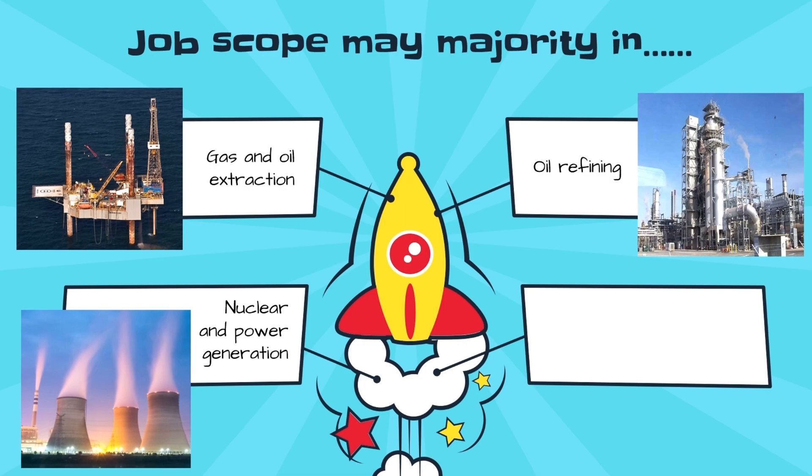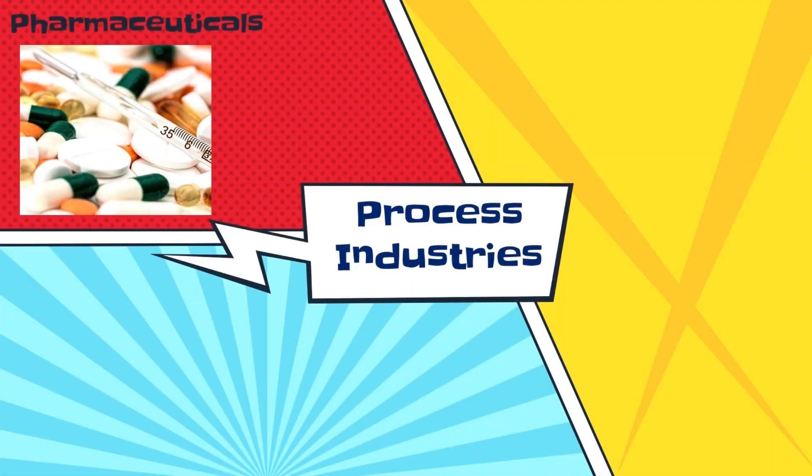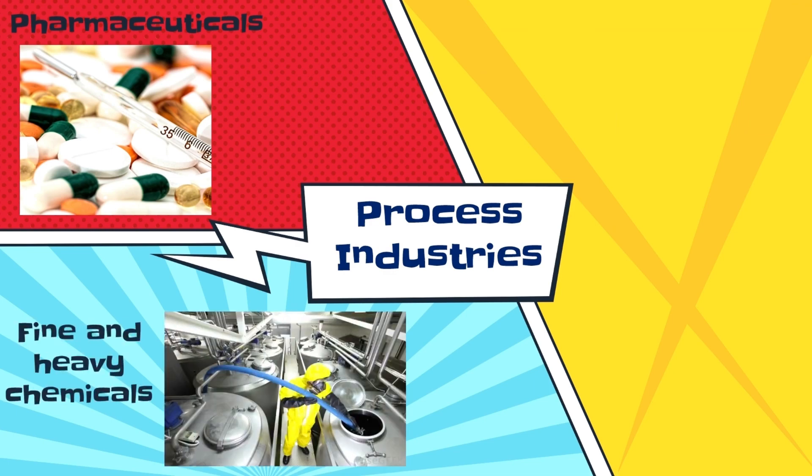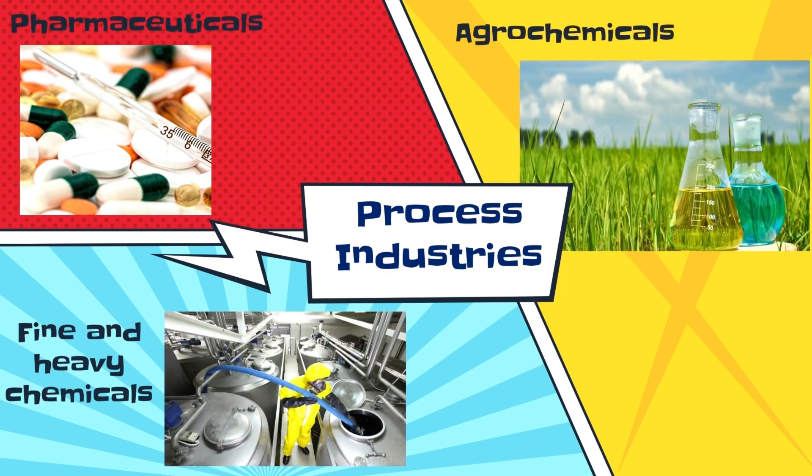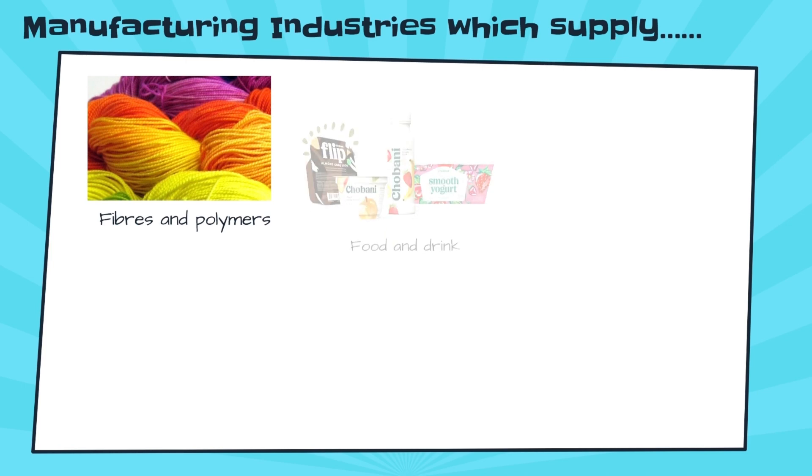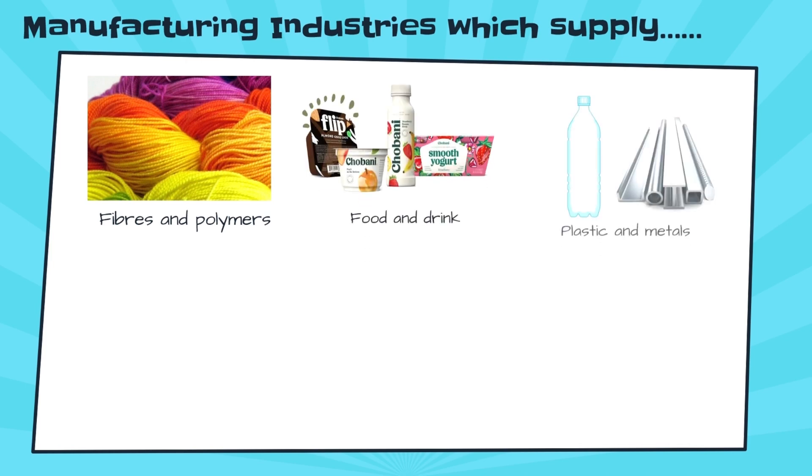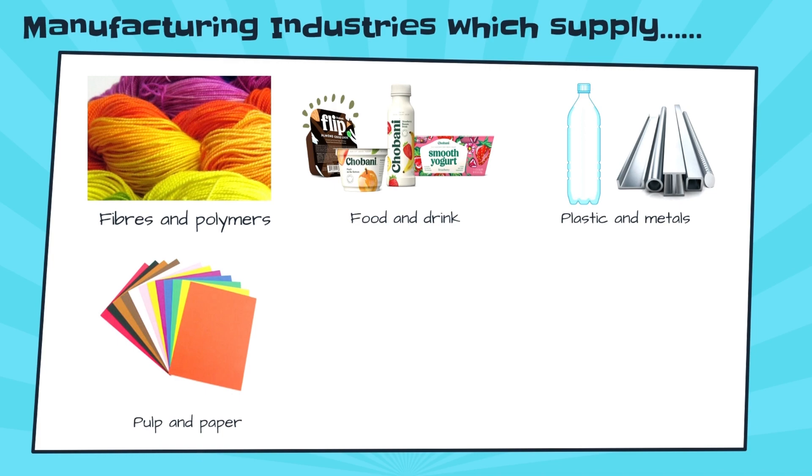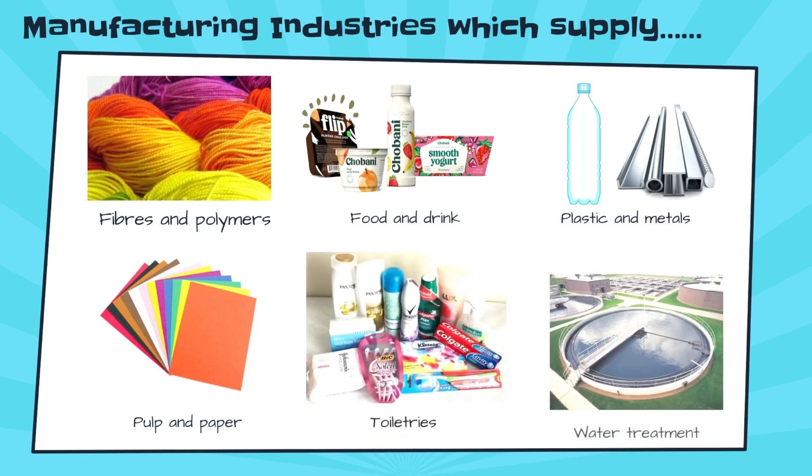Nuclear and power generation, and process industries which may include pharmaceuticals, fine and heavy chemicals, and also agrochemicals. Other manufacturing industries that need chemical engineers include those supplying fibers and polymers, food and drink, plastics and metals, pulp and paper, toiletries, and water treatment.